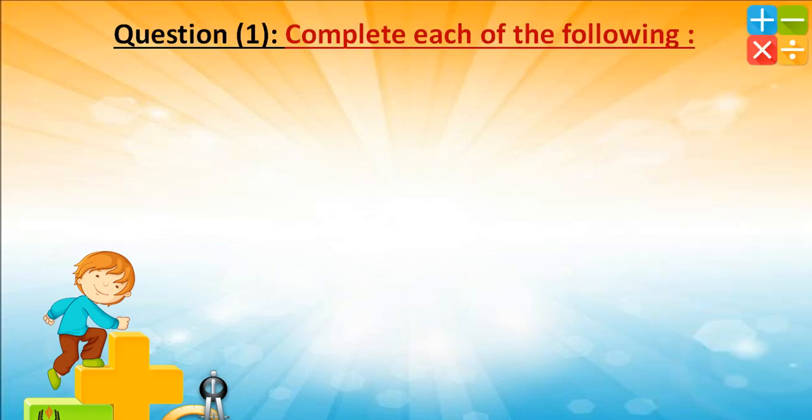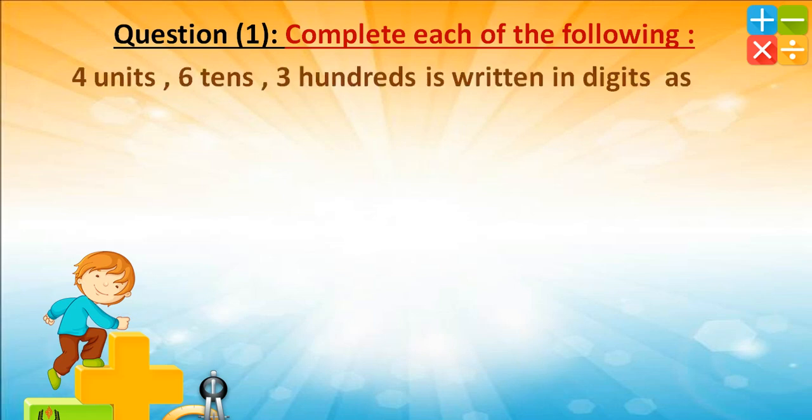The first question: complete each of the following. 4 units, 6 tenths, 3 hundredths is written in digits as — can you tell me how can we form this number? 6 tenths, 4 units: 300, 600. So the number is 364. Well done!